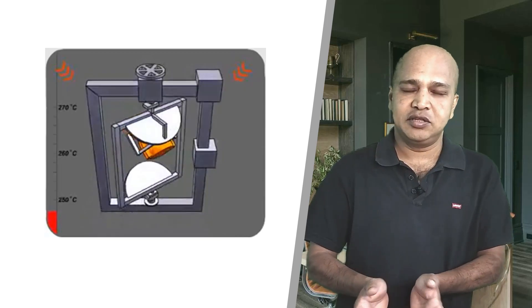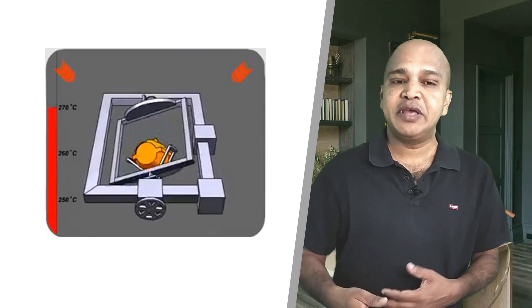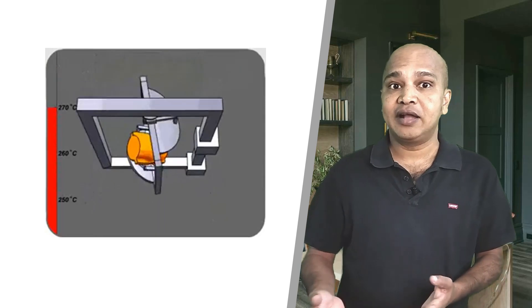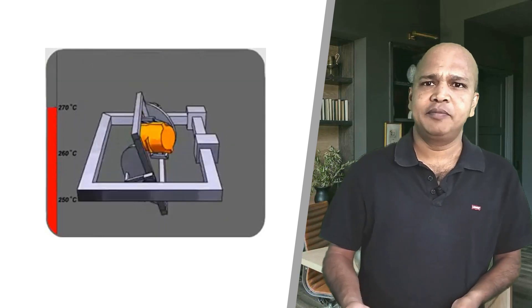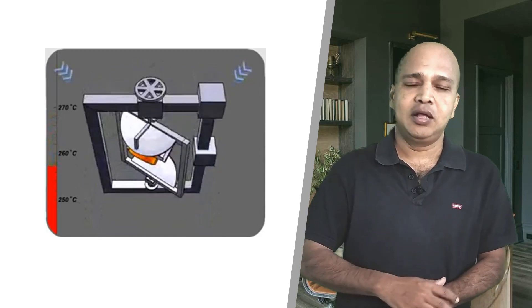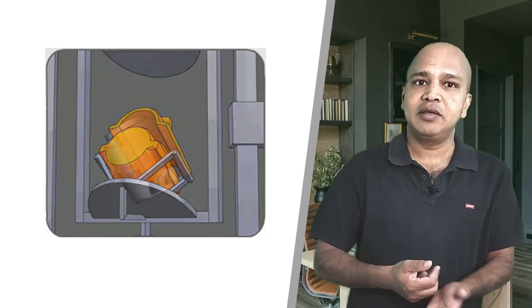The kind of products we make out of this process are like water tanks, kayaks, and road cones which we keep on the roads for dividing the roads into two parts. These are the typical parts which we make out of rotational molding. With this I believe I have covered major methods which are used in the plastic industry to form plastic parts.